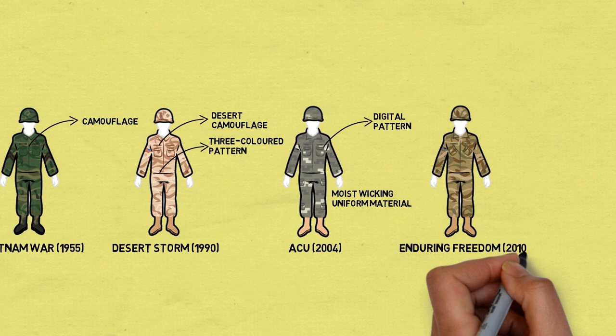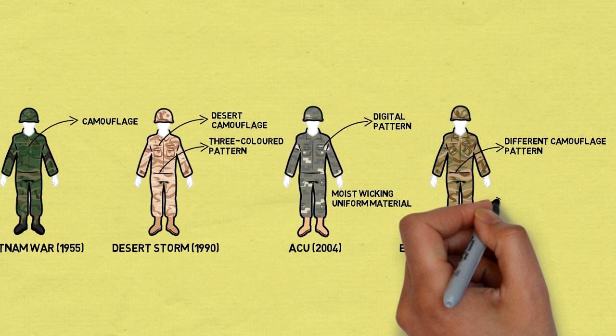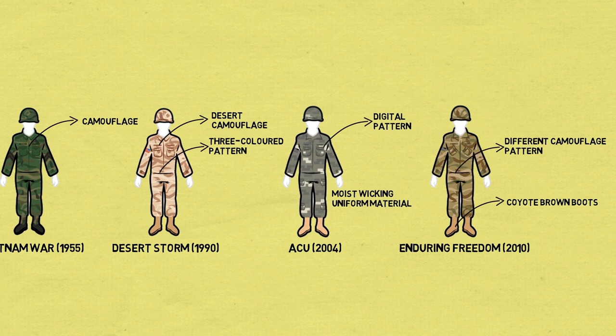Operation Enduring Freedom 2010: In 2010, the Army Combat Uniform was replaced by the Enduring Freedom camouflage pattern. The uniforms are largely the same except for the camouflage pattern.